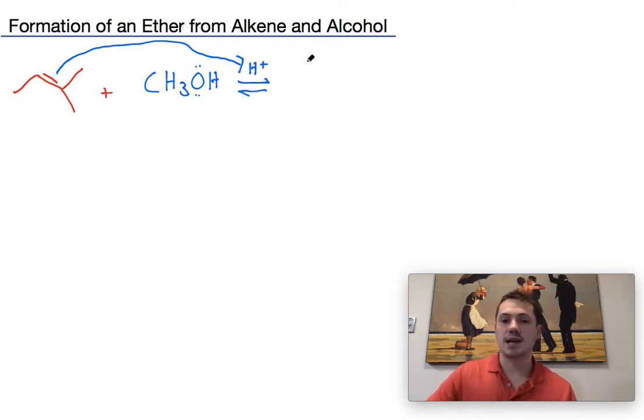What happens next is we basically think of this pi bond as hinging open in either direction, and when it hinges open, that hydrogen is going to attach to either of the two carbons leaving a vacancy and therefore a positive charge on the other of the two atoms.